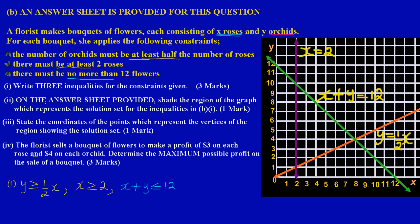Part two states: on the answer sheet provided, shade the region of the graph which represents the solution set for the inequalities in B1 — and that's an easy one mark. The region that satisfies the inequalities is the bounded region formed by the three lines: the magenta line, the orange line, and the green line. This bounded region forms a triangle, so you simply shade inside that triangle.